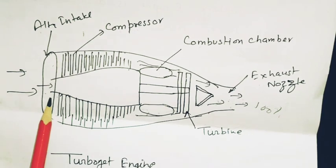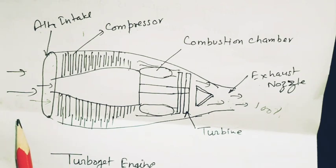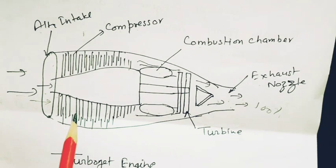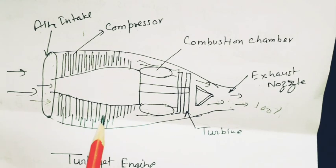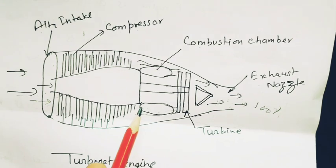From air intake, air is entering at a certain temperature and pressure. Then it is compressed by the compressor. The definition of the compressor is to compress the air to a predetermined pressure. That means pressure will increase, the air is highly pressurized, then it goes to the combustion chamber.